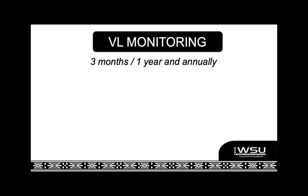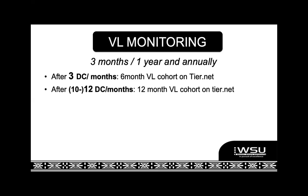For viral load monitoring, the simple principle is: when you start, switch, or restart somebody on ARVs, you do a viral load at three months, then at one year, then annually. What makes the guideline confusing is they talk about dispensing cohorts — three months is actually 12 weeks, since we're dispensing four weeks of treatment at a time. The guidelines recommend a viral load after three dispensing cycles, then when the patient returns at four months for their results, if the viral load is LDL, give them six months of CCMDD. When they come back at ten months, you can also do the viral load at ten months.